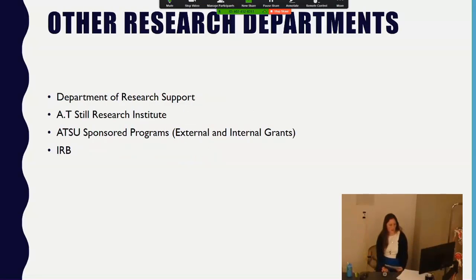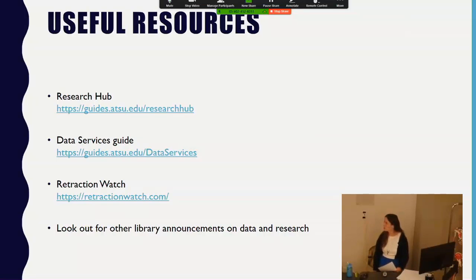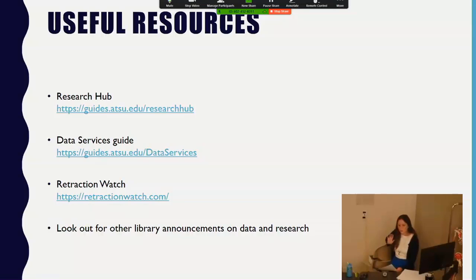There are other research departments at our university to provide support. The Department of Research Support helps with biostatistics, scientific writing, and research coordinating. Sponsored Programs offers assistance with pre-award, award acceptance, and post-award. Each campus has an IRB to review research protocols and ensure everything is ethical. Some useful resources: the Research Hub is live now and will be on the left navigation under Library Services. There's also the Data Guide, which has lots of tools and information about data, and the Retraction Watch blog, which was the source for our retraction examples.